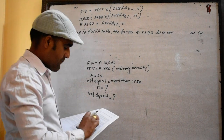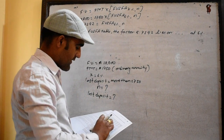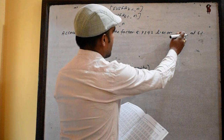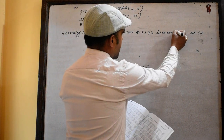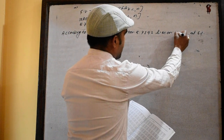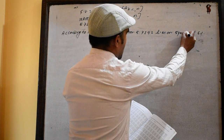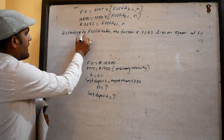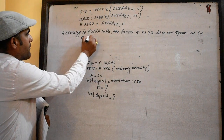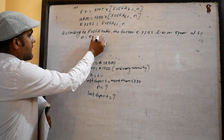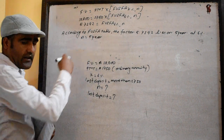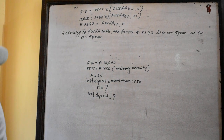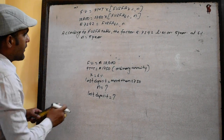Approximately 5 years. The answer is approximately 5 years to reach the goal of $10,000.